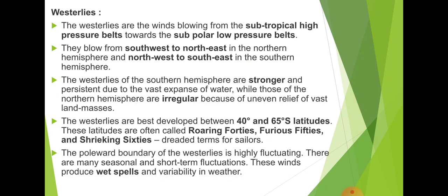The westerlies blow from 30° to 60° latitude, from the subtropical high pressure belt toward the subpolar low pressure belt — the Ferrel cell. They blow from southwest to northeast in the northern hemisphere. In the polar region of the northern hemisphere, they move from northeast to southwest, but in 30° to 60°, they move southwest to northeast. In the southern hemisphere, in the polar region, winds move from southeast to northwest, but in 30° to 60°, they move northwest to southeast.